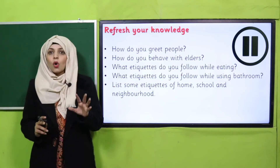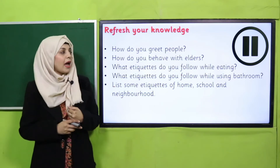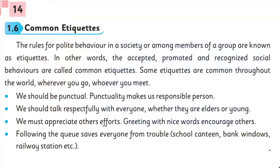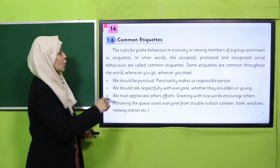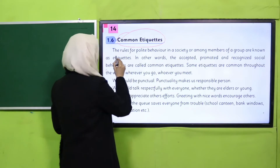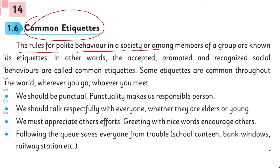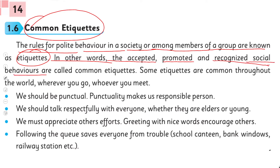Think about these questions and answer them, then open page number 14 in your books. Let's start reading about common etiquettes. The rules for polite behavior in a society or among members of a group are known as etiquettes. In other words, accepted, promoted, and recognized social behaviors are called common etiquettes. Some etiquettes are common throughout the world — wherever you go, whoever you meet.